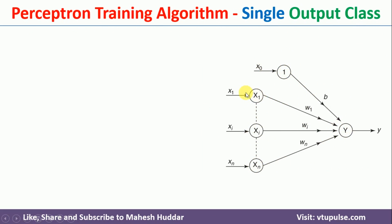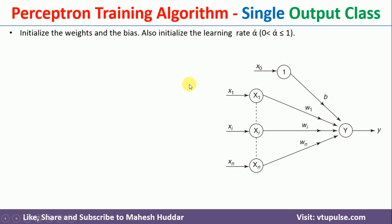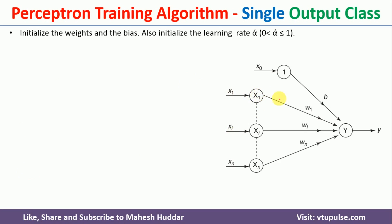Now, what we need to do in the perceptron training algorithm is: first, we need to initialize the weights. For every input neuron, we have a weight — x1 has w1, xi has wi, and the nth unit has wn. We need to initialize all these weights along with the bias. Once that is done, we need to initialize the learning rate alpha, which should be in the range of 0 to 1.